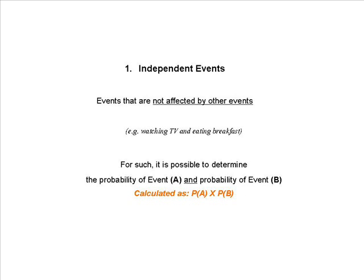Let's look at independent events first. Independent events are events that are not affected by other events — for example, watching TV and eating breakfast. For such events, if we have 2 independent events A and B, it will be possible to determine the probability of event A and the probability of event B by multiplying probability of A by probability of B.